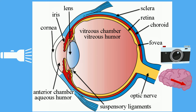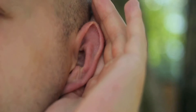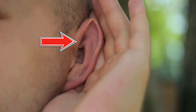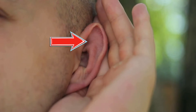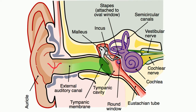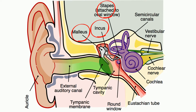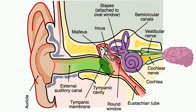Your ears allow you to hear. The outside portion of your ear is designed to capture sound waves, which are funneled down the ear canal to the eardrum. The eardrum vibrates like a drum and sends these vibrations to three small bones — the hammer, anvil, and stirrup, also called the malleus, incus, and stapes. The stirrup sends vibrations to the cochlea, which in turn sends impulses to your brain.